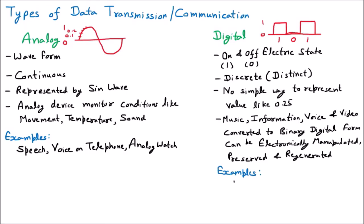An example of a digital signal is the digital watch. Today the trend of digital watches gives us accurate results. There is a direct conversion — no floating values in between, just a direct value. There are no decimal point values, so that is a digital watch.